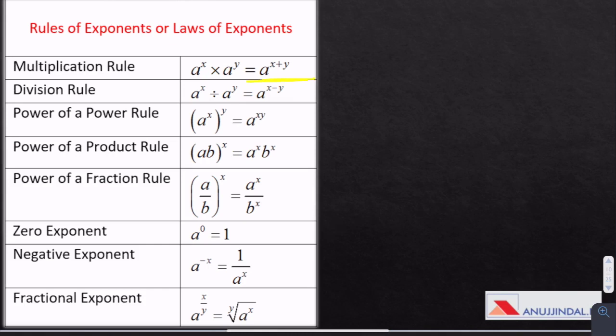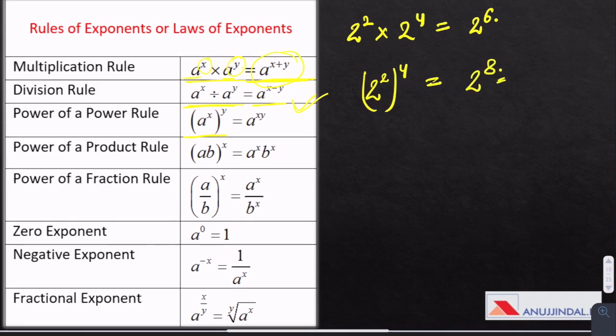Multiplication rule. 2 to the power 2 times 2 to the power 4 equals 2 to the power 6. We just add them. When the variables are in multiplication, we add the powers. Division rule: for division, we subtract the powers. Power of a power rule: 2 to the power 2 to the power 4, then we multiply the powers. It becomes 2 to the power 8, not 6.